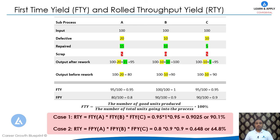In some industries, organizations want to know the true performance of their processes without considering rework. In that case, instead of FTY they use First Pass Yield. The RTY then equals 0.8 × 0.9 × 0.9, which comes to 0.648, or 64.8%.